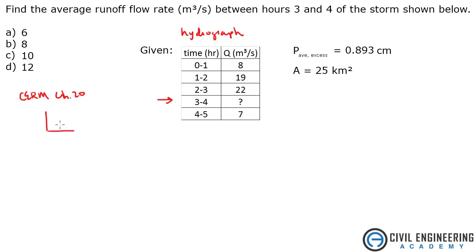Basically, you could plot this as Q versus T. On hour 1 you'd have 8, hour 2 is 19, then 22, hour 3 we don't know, hour 4 is 7, and you'd develop some sort of curve like this. And we're trying to find the value right there at this time, 3 to 4 hours.